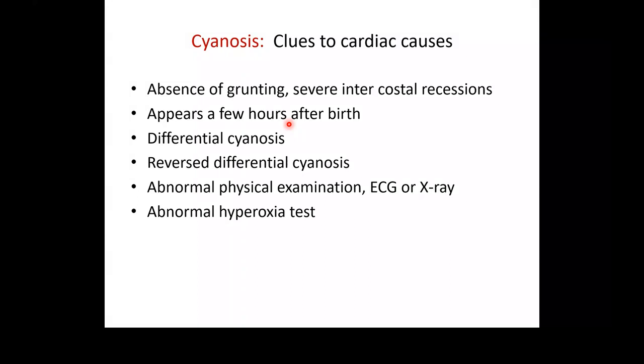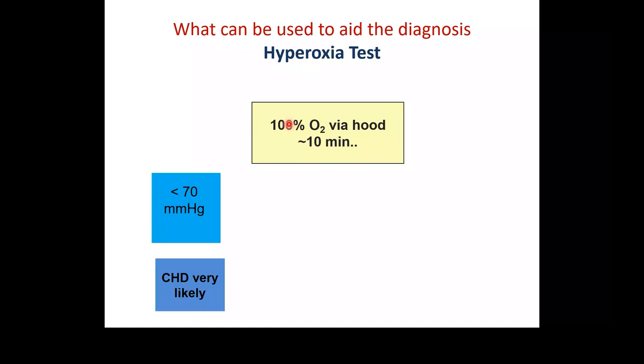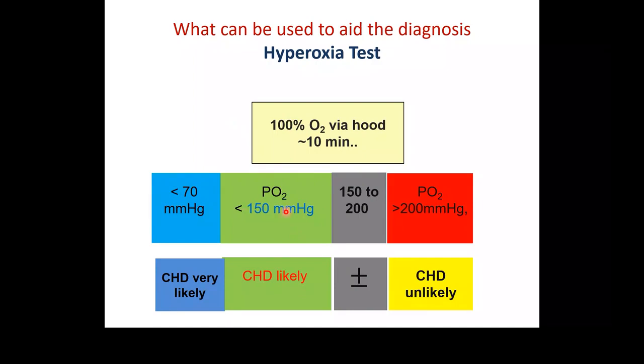The hyperoxia test: give 100% oxygen to the baby for around 10 minutes then check PO2. If PO2 is less than 150, congenital heart disease is likely; if less than 70, it's very likely. If PO2 rises above 200 with 100% oxygen, congenital heart disease is very unlikely — it's more likely a respiratory cause, because cardiac causes don't usually correct with oxygen.